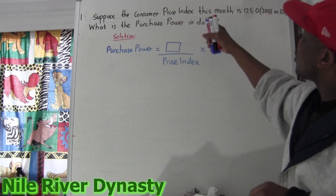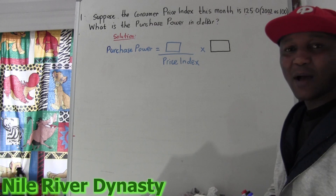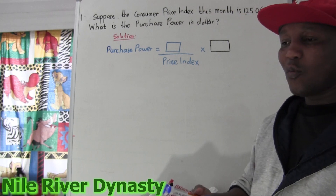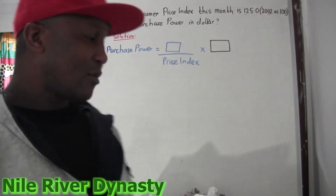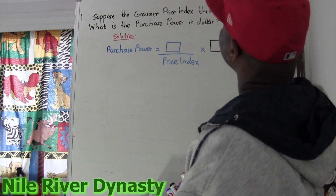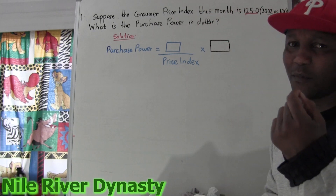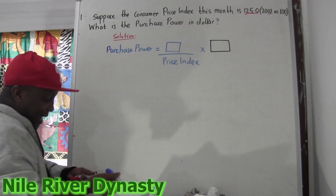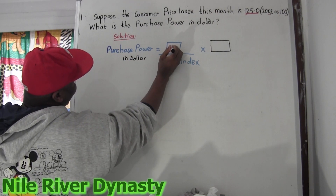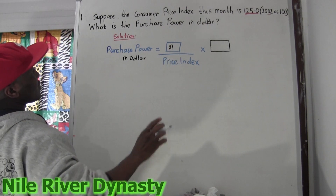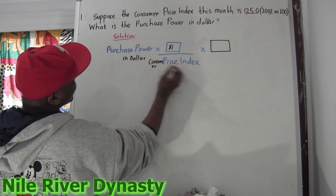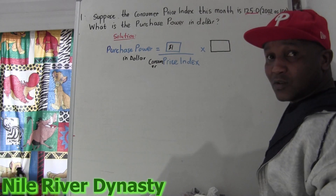How you doing? Okay, so easy. Suppose the consumer price index is given. Now they want to find the purchase power — it could be in dollars, Canadian dollars, Nigerian naira, Kenyan shillings, Ghana cedis, or whatever currency. The formula for purchase power in dollar is: one dollar divided by the consumer price index, multiplied by 100.